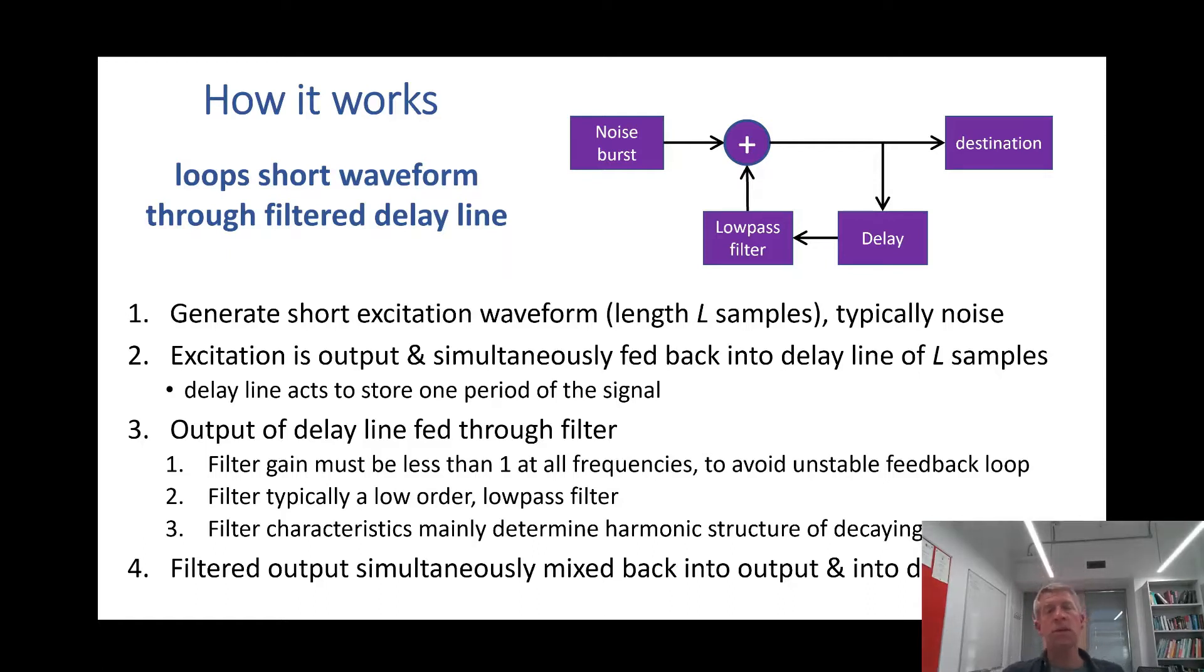So as it was initially described, there's an excitation waveform, typically in the form of a burst of noise, and that waveform is the same length as a delay in a feedback loop. The delayed signal rather than being passed just through again is passed through a low pass filter which models the attenuation as a wave vibrates, hits the end, and bounces back. The excitation, the noise burst, is simultaneously fed to the destination, so to the output and to the feedback loop, and it goes around the feedback loop as shown.